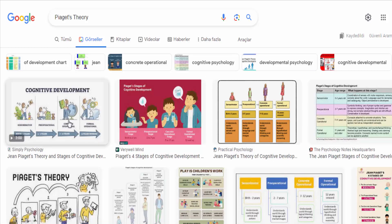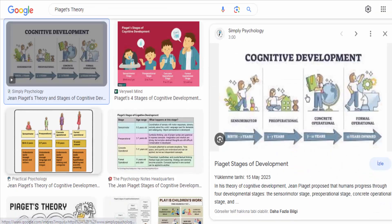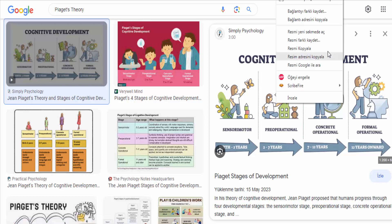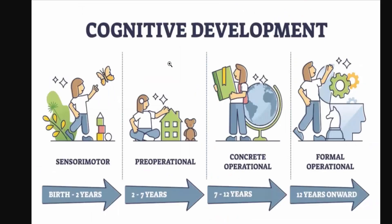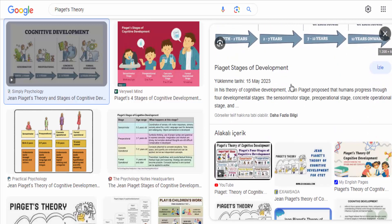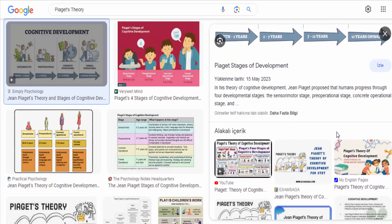Piaget's theory refers to the cognitive development theory proposed by the Swiss psychologist Jean Piaget. It focuses on how children develop their thinking abilities and acquire knowledge about the world around them. According to Piaget, children progress through distinct stages of cognitive development, with each stage building upon the previous one. Piaget identified four major stages of cognitive development.